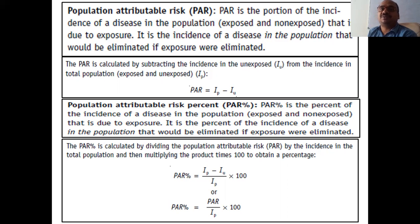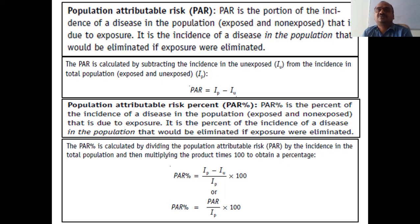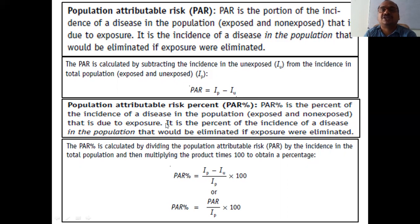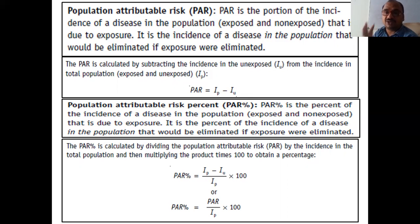Next is population attributable risk (PAR). It is the portion of incidence of a disease in the total population — both exposed and non-exposed. The formula is PAR = I_p minus I_u, where I_p is the incidence in the exposed and I_u is the incidence in the unexposed. Multiplying by 100 gives PAR percentage.